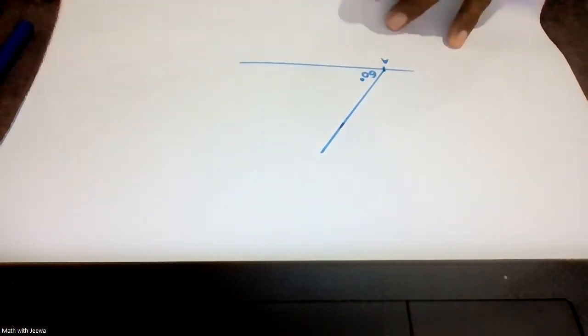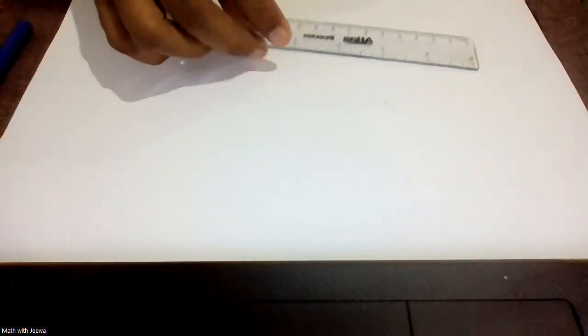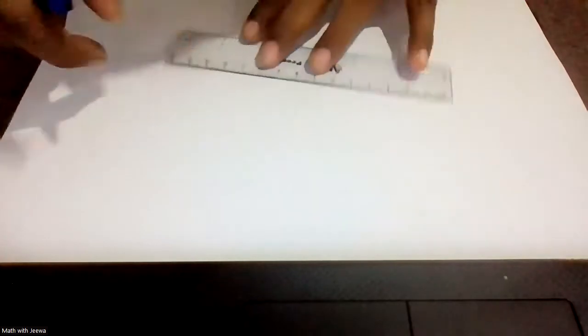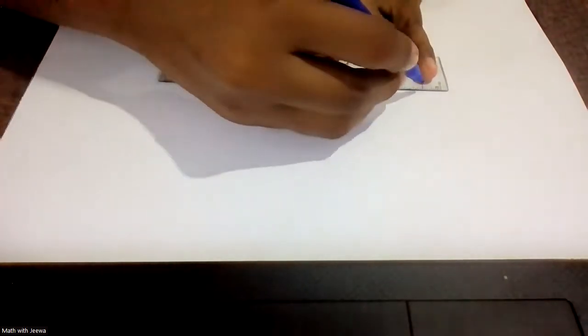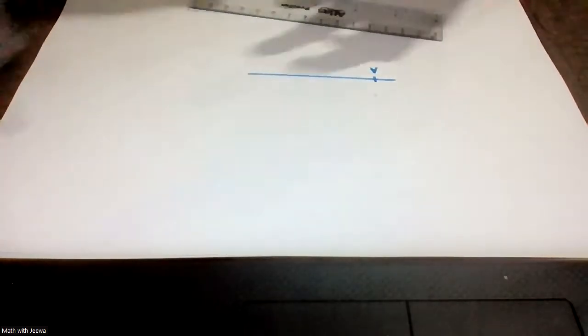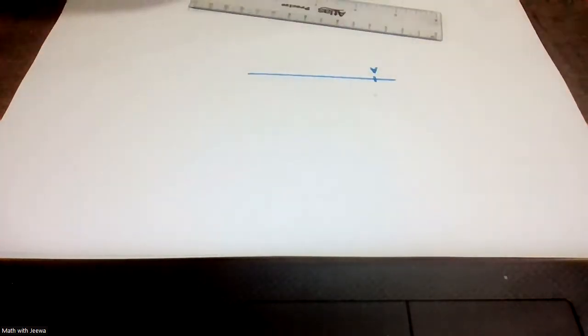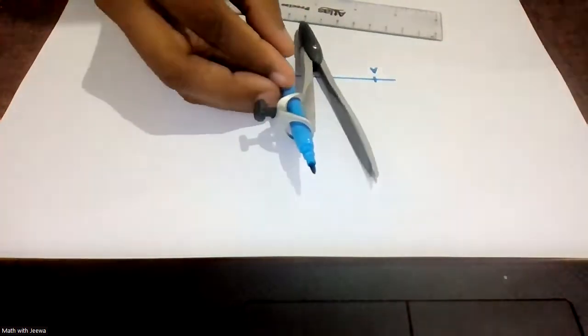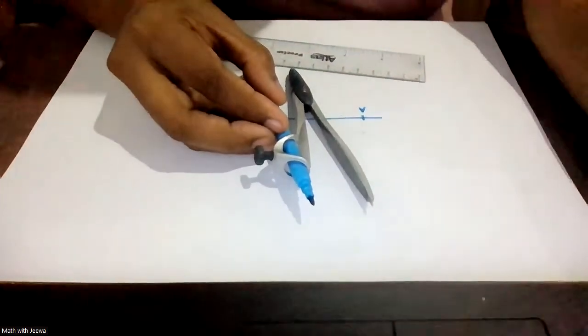Now I'm going to explain how to construct an angle of 60. For that I need the compass. I draw a free line and mark point A again. Then I take my compass and open it. I keep the point here on A.